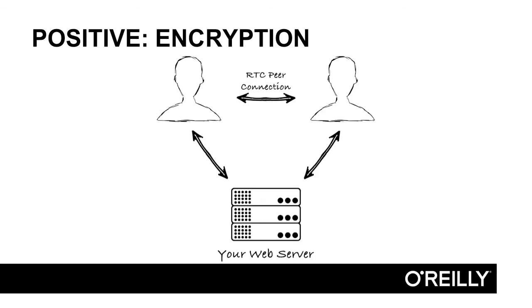One important thing to note is that the signaling or handshaking required to start a WebRTC connection is not encrypted. Be careful about including uniquely identifying information about users in the signaling code, or you may cause a security leak. The WebRTC encryption will still protect the content of the conversation, but including sensitive information in the signaling process could allow hackers to determine who is in conversations at what times, and that alone may be information you don't want to share.